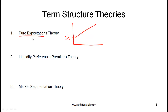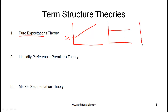Can the pure expectations theory explain any shape of the yield curve? The answer is yes. A flat yield curve implies that the expectation is that interest rates will not change in the future. A downward sloping yield curve would imply that interest rates in the future are coming down. The bottom line is the pure expectations theory can be used to explain any shape of the yield curve.